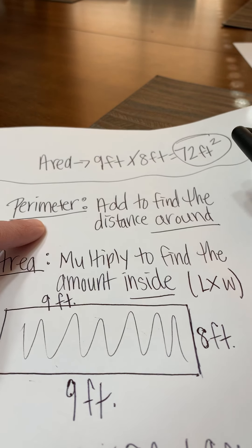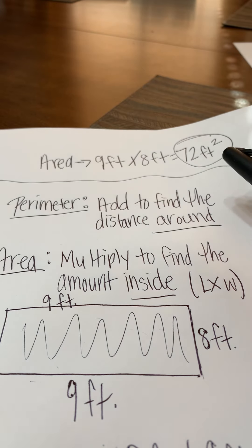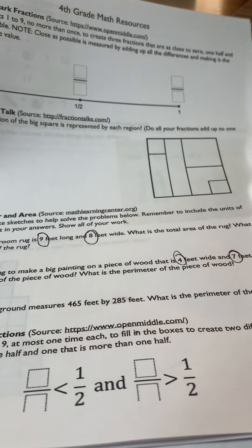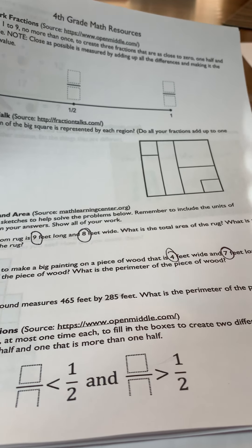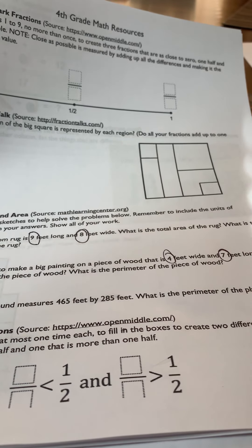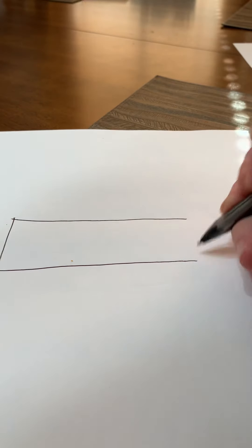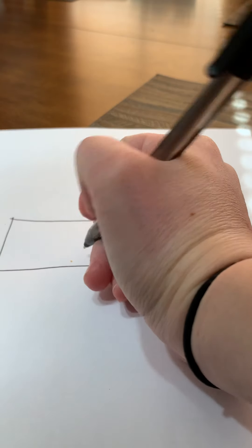Now I'm going to move on to the next problem down in your packet. This one is talking about Chrissy. Chrissy is going to make a big wood painting on a piece of wood that is four feet wide and seven feet long. What is the total area of the piece of wood? What is the perimeter of the piece of wood? This is very similar to what we did before. We're going to start by drawing out our piece of wood.